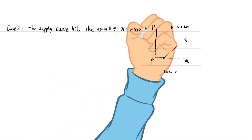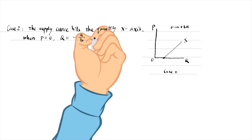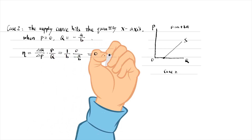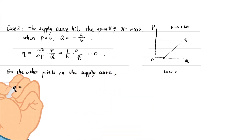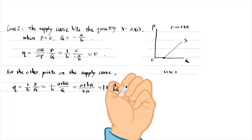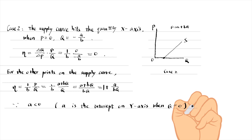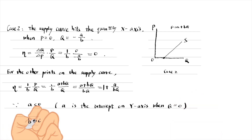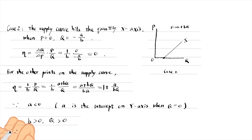In case 2, the supply curve hits the quantity x-axis. When P equals 0, Q equals minus A over B. Substituting the values into the supply elasticity formula, we find that the supply elasticity at that point is 0. For the other points on the supply curve, eta equals 1 plus A over (B times Q). In this case, A is negative because it is the intercept on the y-axis when Q equals 0. B is the slope of the supply curve, which is positive. Q is the quantity supplied and is also positive. So eta is less than 1.